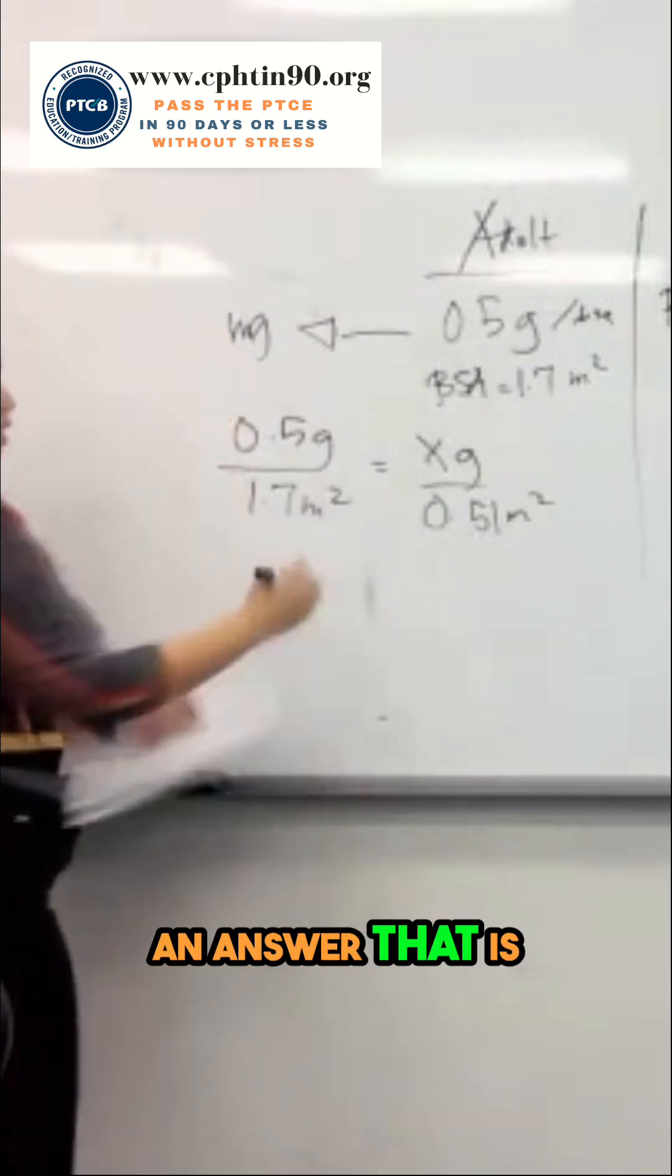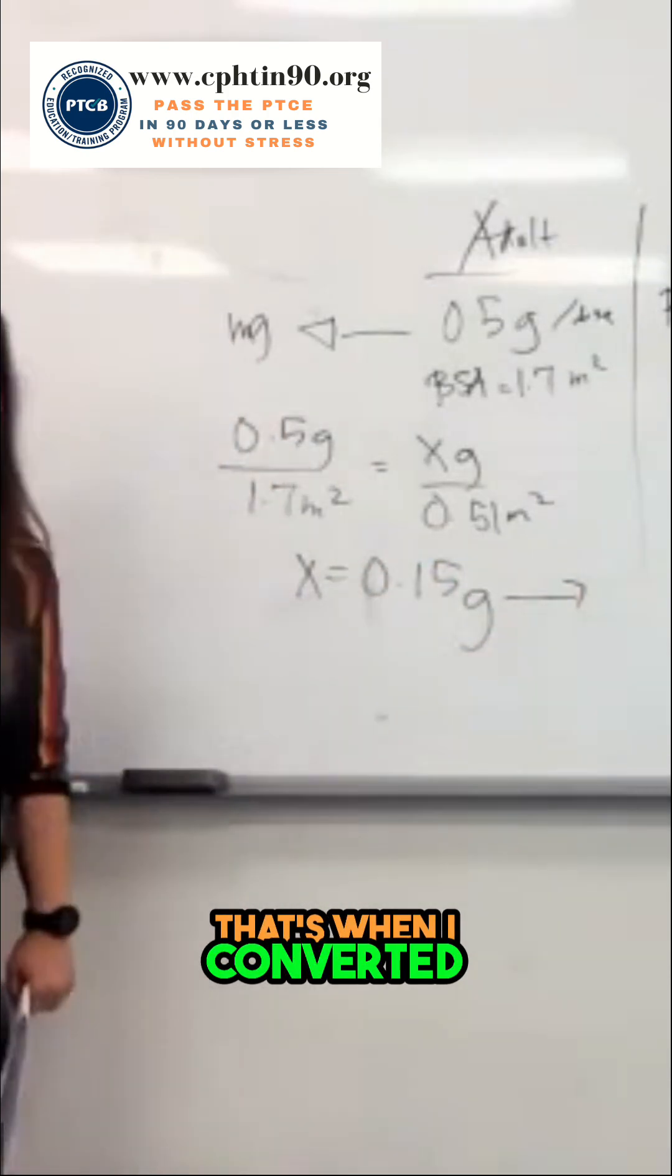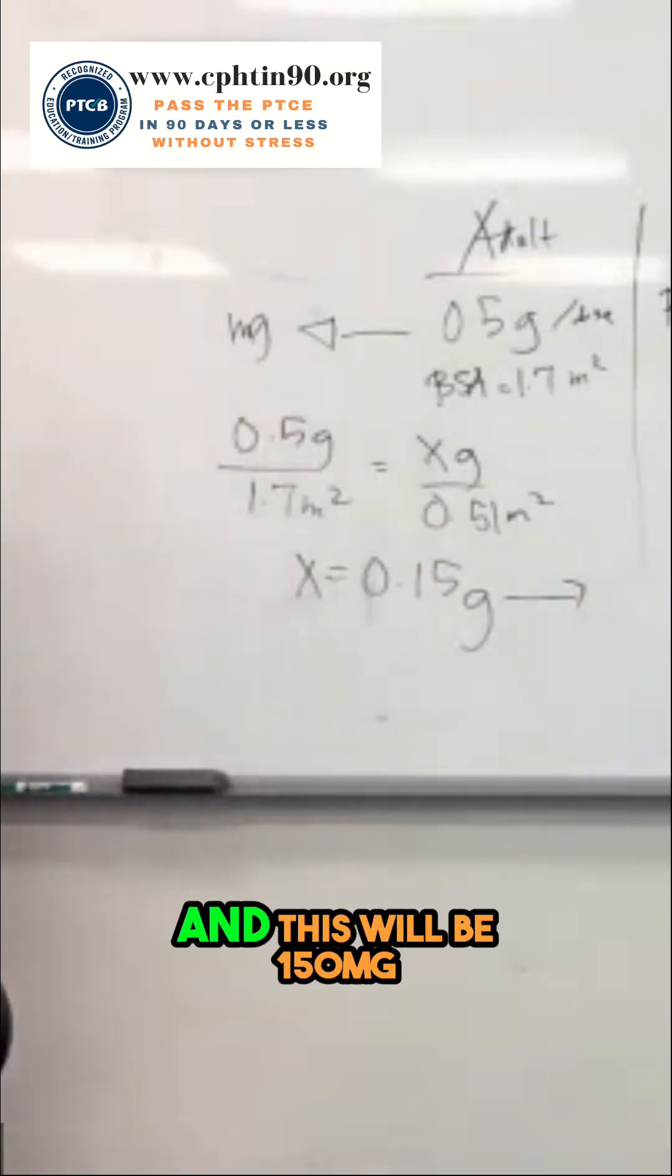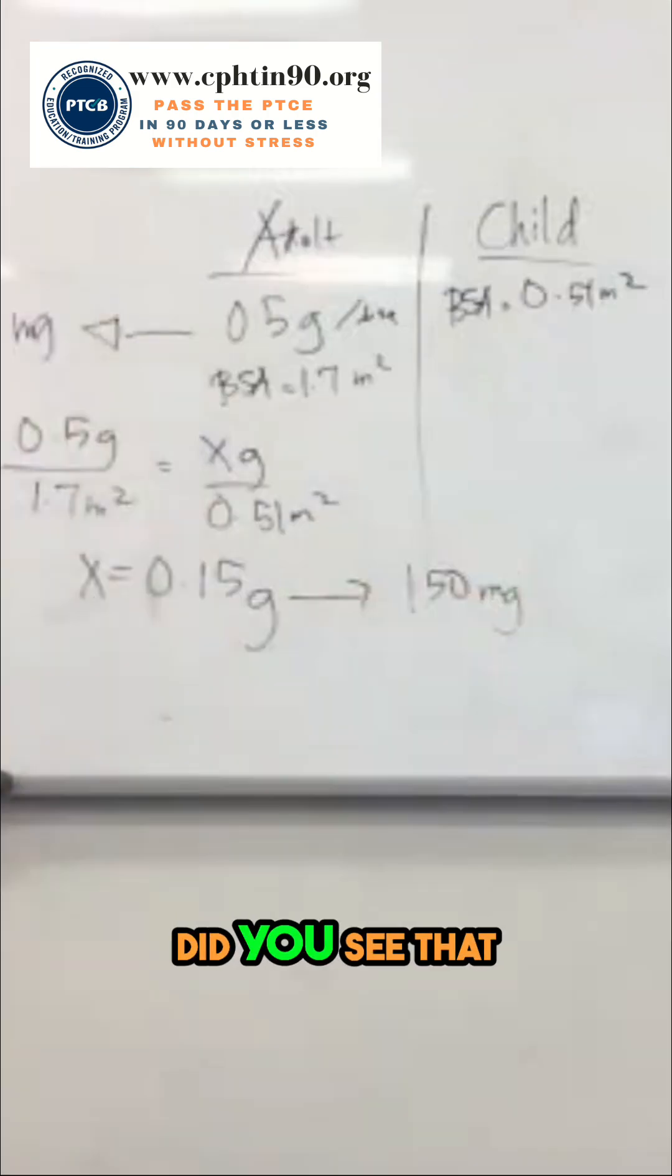And then I got an answer that is X equals 0.15 grams. And from here, that's when I convert it to milligrams. And this will be 150 mg. Do you see that? Yeah?